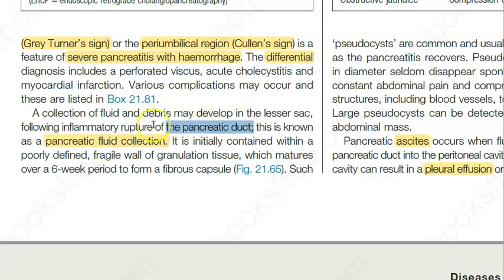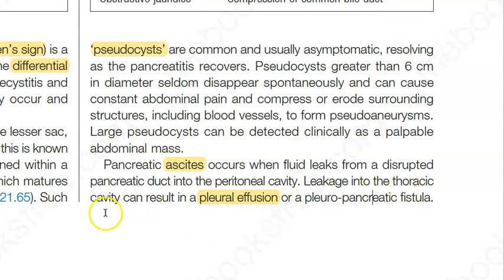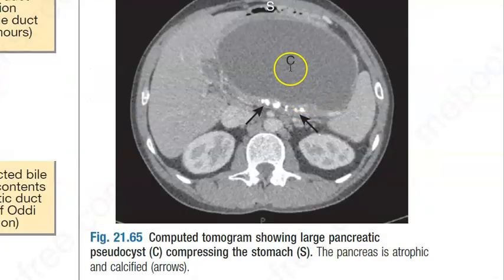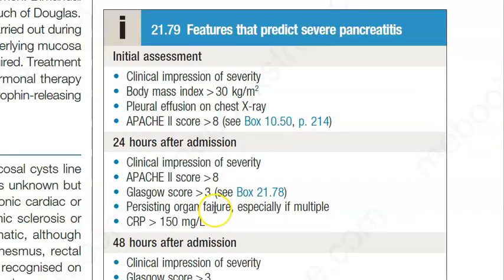If there is rupture of the pancreatic duct, there will be fluid collection and debris in the lesser sac — known as pancreatic fluid collection — which can lead to pseudocyst formation. Pancreatic ascites occurs when fluid leaks from the disrupted pancreatic duct into the peritoneal cavity. Leakage into the thoracic cavity can lead to pleural effusion.